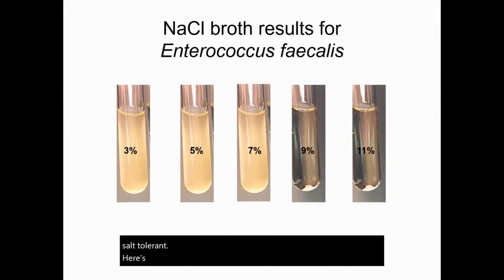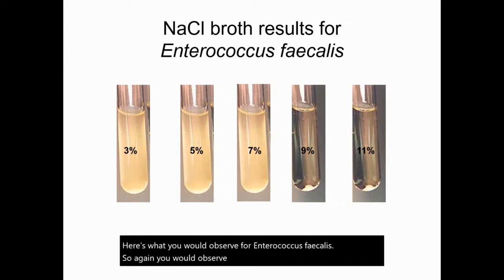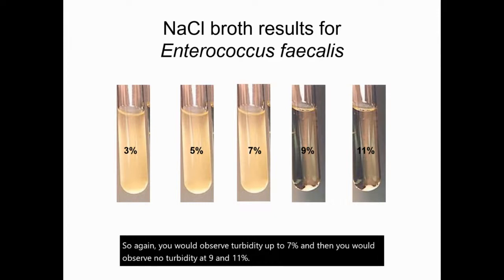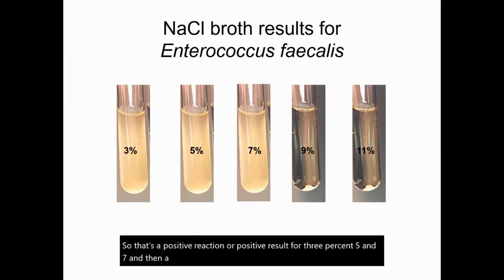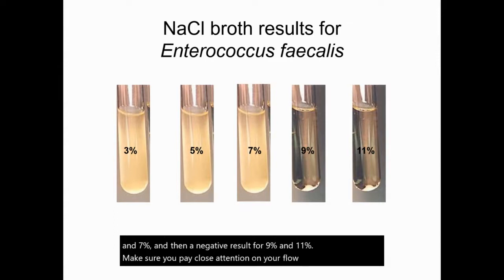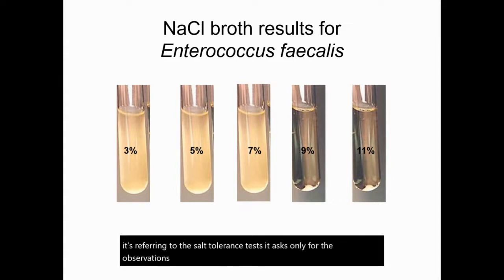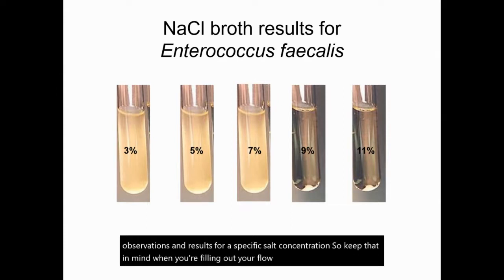Here's what you would observe for Enterococcus faecalis. You would observe turbidity up to 7%, and then no turbidity at 9% and 11%. So that's a positive result for 3%, 5%, and 7%, and a negative result for 9% and 11%. Make sure you pay close attention on your flow chart, because when it refers to the salt tolerance test, it asks only for the observations and results for a specific salt concentration. Keep that in mind when filling out your flow chart.